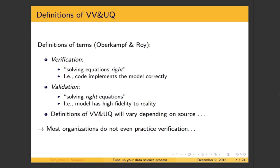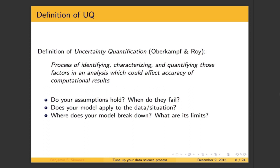Moving on to uncertainty quantification. This is the process of identifying, characterizing, and quantifying those factors in an analysis which could affect accuracy of computational results. You want to worry about your assumptions — do they hold, and when do they fail? Think about the disasters with the Bay Bridge. The design that won had assumptions that were never really tested, and they have lots of problems with parts of the bridge failing. Caltrans is spending hundreds of millions of dollars to try to make the bridge safe. There were a lot of assumptions that weren't challenged or tested.